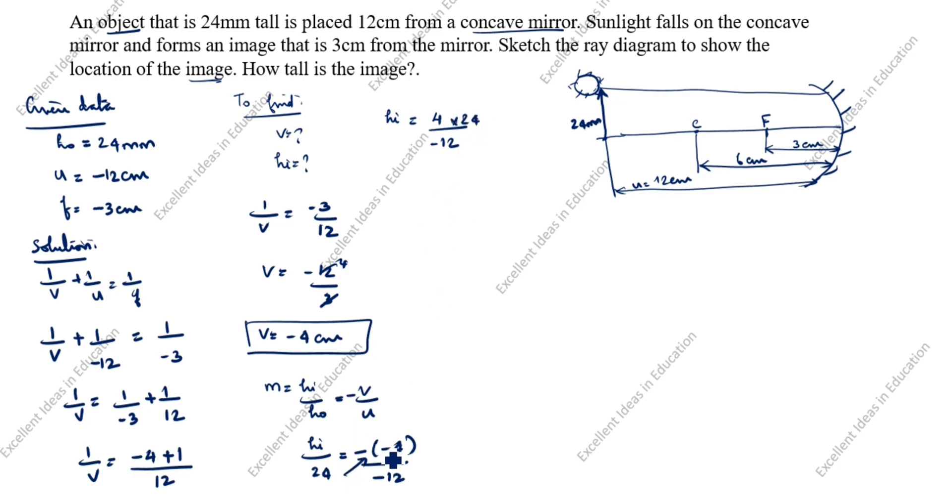HI is equal to plus 4 divided by minus 12, this 24 goes up times 24. Here minus into minus is plus. 1 four is 4, 3 fours are 12. HI is equal to 24 divided by 3. 1 three is 3, 8 threes are 24. HI is equal to minus 8 mm.